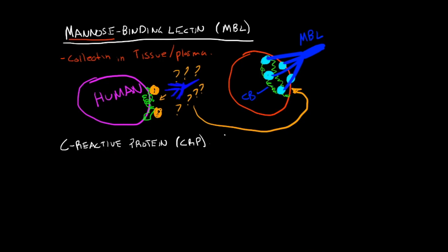Now what about C-reactive protein? What is C-reactive protein? So it is a protein, it's not a colectin, it's a protein that is found in tissue, fluid, and plasma.